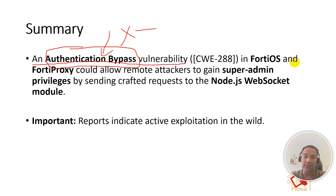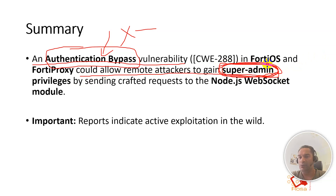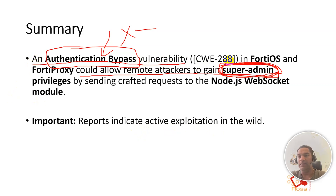Even more critically, this could allow a remote attacker to gain super admin access and super admin privileges. If an unauthenticated attacker gets super admin privileges to your device, you can imagine what they can do — they essentially have full access to your FortiGate. An authentication bypass vulnerability in FortiOS and FortiProxy could allow remote attackers to gain super admin privileges by sending crafted requests to the Node.js WebSocket module.